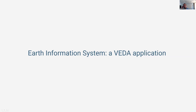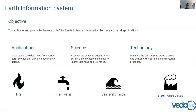One of the main applications VEDA is supporting is the Earth Information System, which promotes use of Earth science information for research and applications. It's focused on delivering higher level, decision-ready products in the hands of end users as quickly as possible, which also involves modeling at much higher temporal and spatial resolutions. VEDA is the data system for four areas: active fire, fresh water, sea level change, and greenhouse gas.